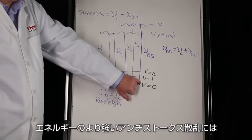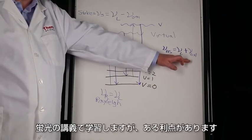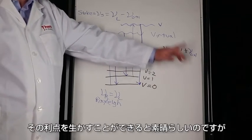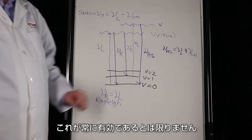And the anti-Stokes photon, which is higher in energy. As we'll see when we talk about fluorescence, it has certain advantages. It would be nice to be able to use this, but because of something called the Boltzmann distribution, this is not always that useful.